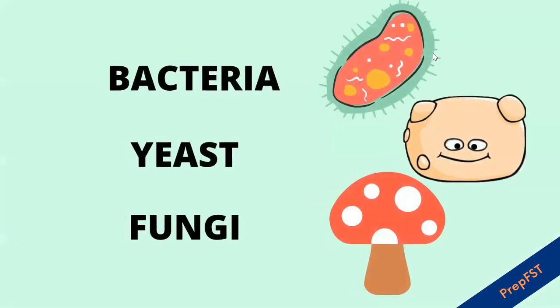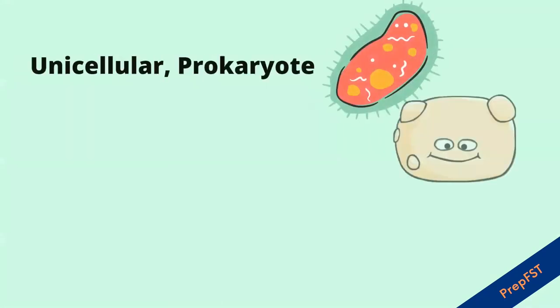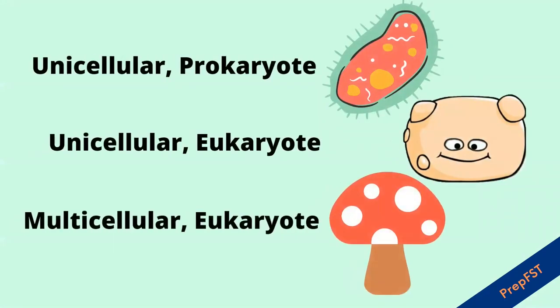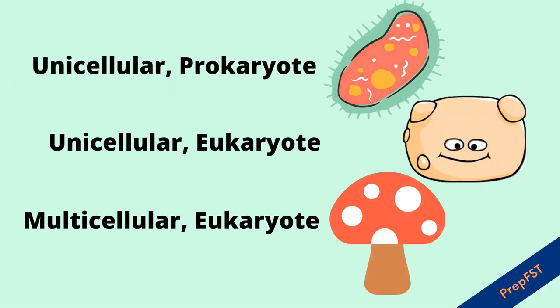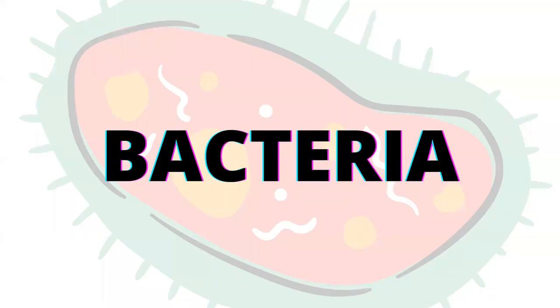Let's talk about the important microorganisms in food. The three most important groups of organisms that we study in food microbiology are bacteria, yeast and fungi. Bacteria are unicellular prokaryotes, yeast are unicellular eukaryotes, whereas fungi are multicellular eukaryotes. Let's start with bacteria.